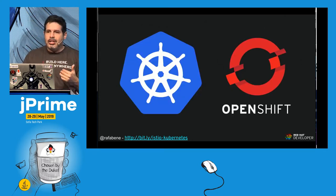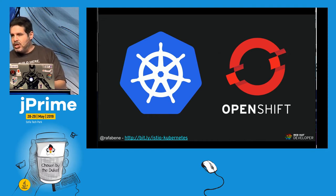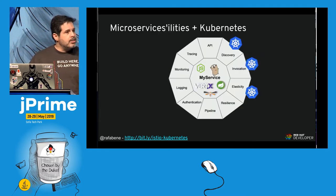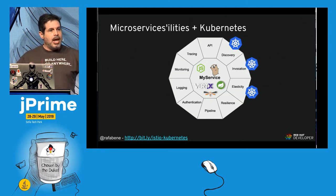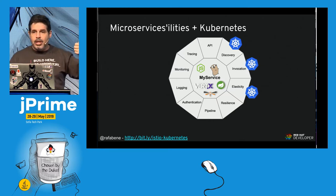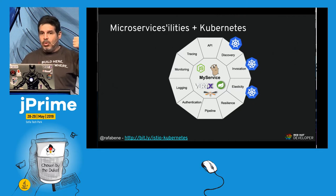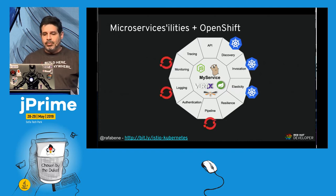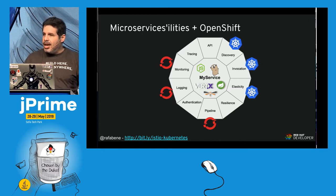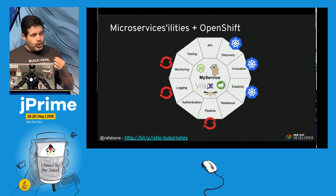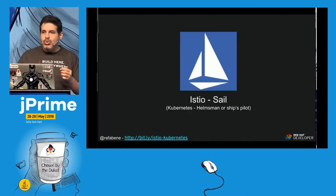Fortunately, there is Kubernetes and OpenShift. If you adopt Kubernetes, you get service discovery for free, invocation for free, and elasticity for free. Plus, if you use OpenShift, you also get monitoring, logging, and pipeline for free. So what are we still missing? For those remaining pieces, we can use Istio.